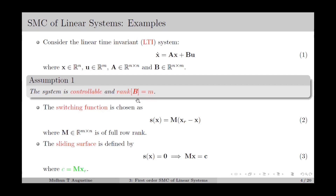Now we select the switching function as in equation number 2. This is the general form of the switching function for state feedback based SMC. Here, M is the parameter matrix which contains the coefficients of this linear switching function, and we assume M is of full row rank — in other words, the rank of the matrix M is equal to small m. The sliding surface is defined by S(x) equal to 0, which gives Mx equal to a constant c, where c equals M times x_r. This is in the form of a linear equation, and therefore this sliding surface is in the form of a hyperplane.